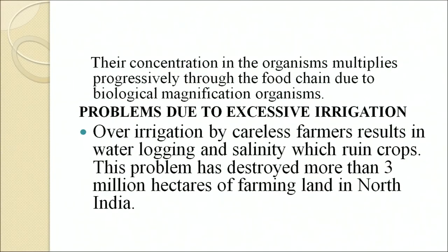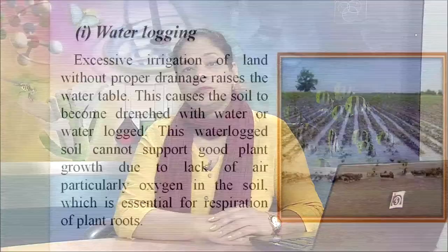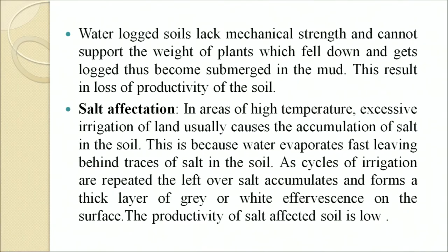Over-irrigation by careless farmers results in waterlogging and salinity which ruins crops. This problem has destroyed more than 3 million hectares of farming land in North India. Excessive irrigation without proper drainage raises the water table, causing the soil to become waterlogged. Waterlogged soil cannot support good plant growth due to lack of oxygen, which is essential for respiration of plant roots. Waterlogged soil also lacks mechanical strength and cannot support the weight of plants.